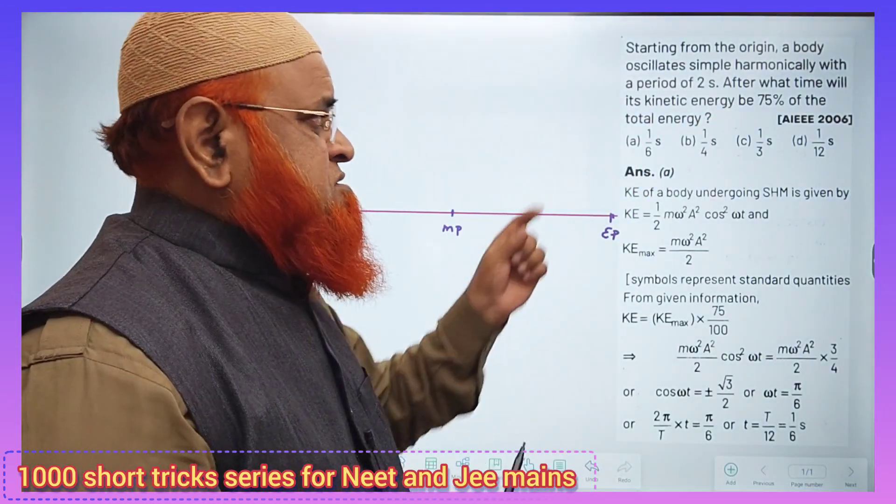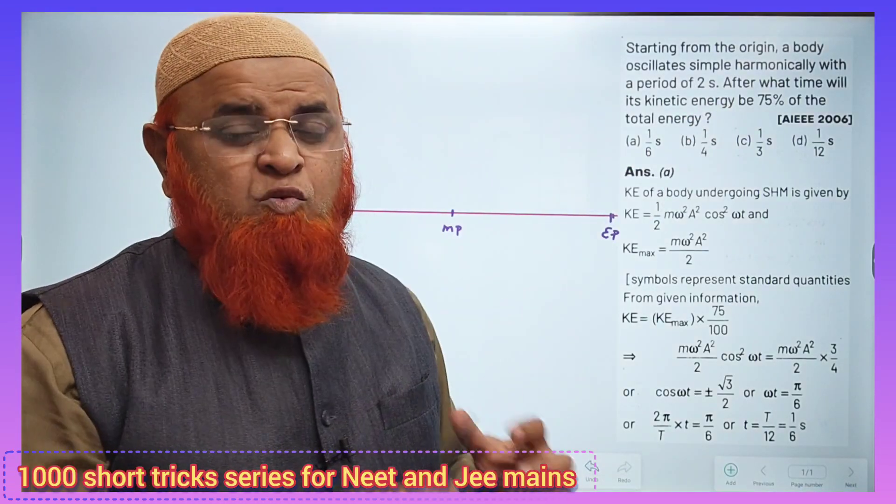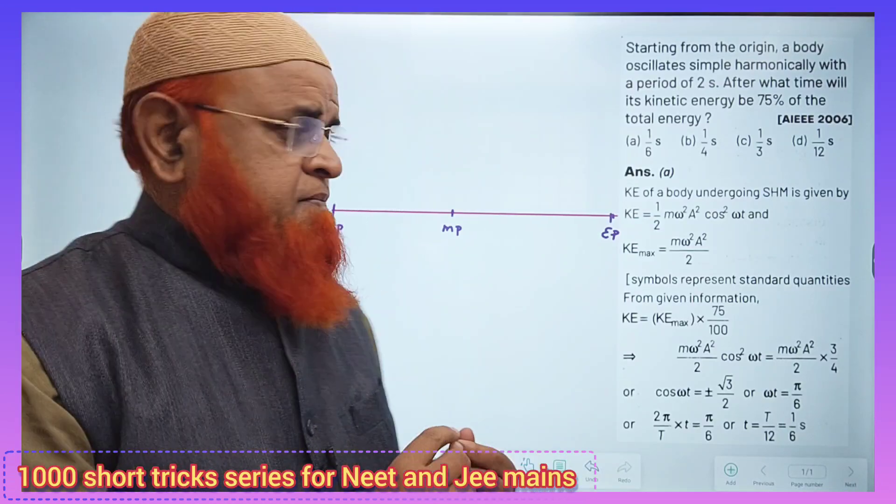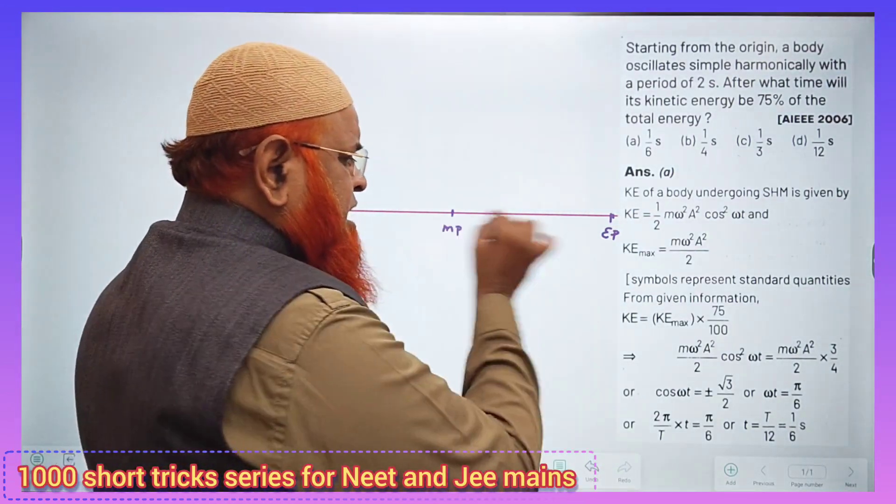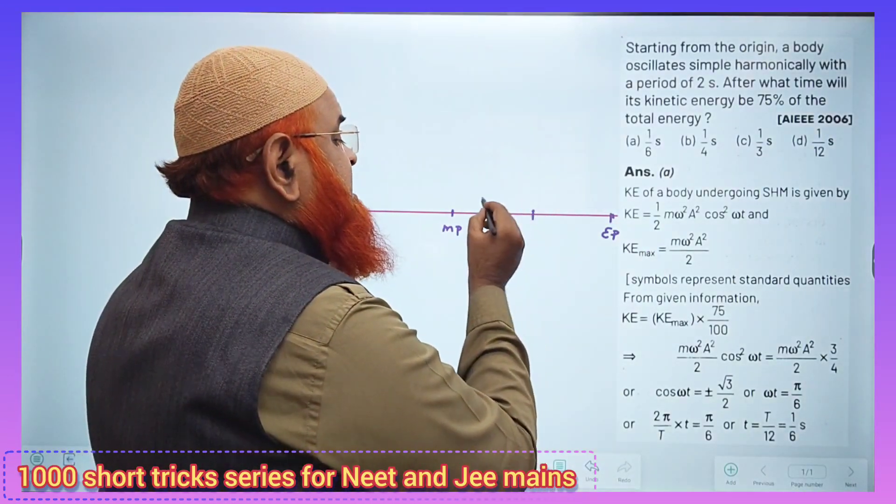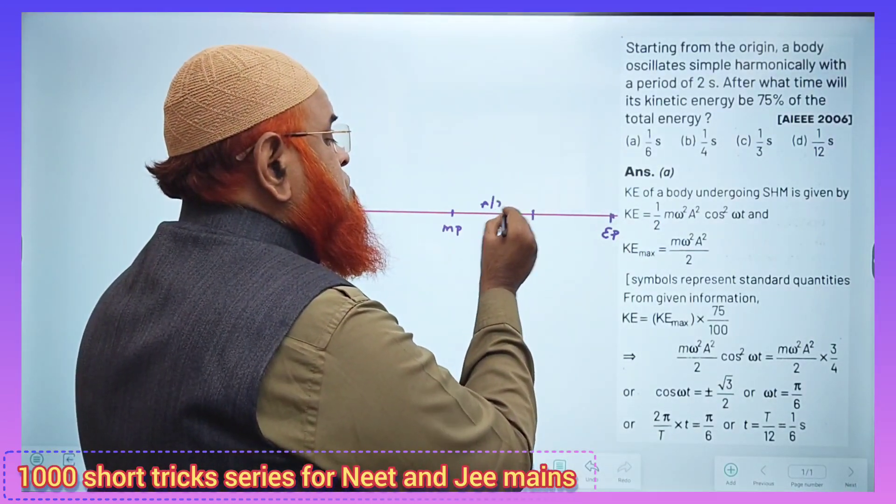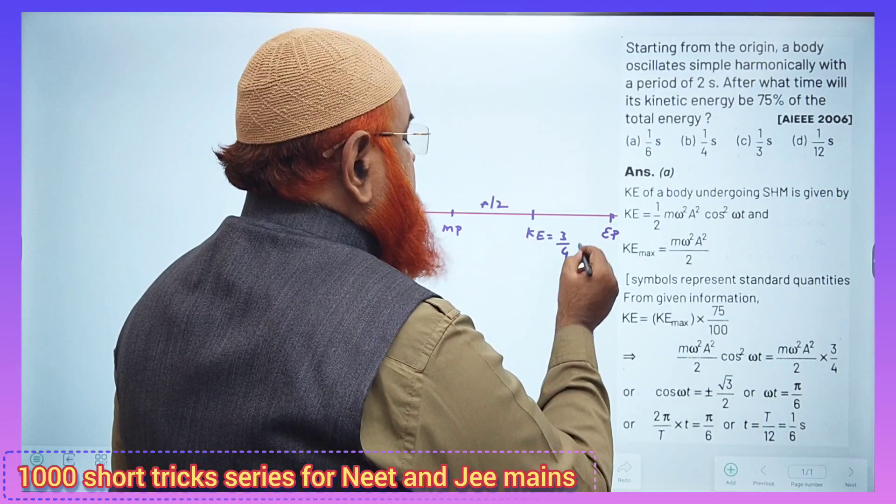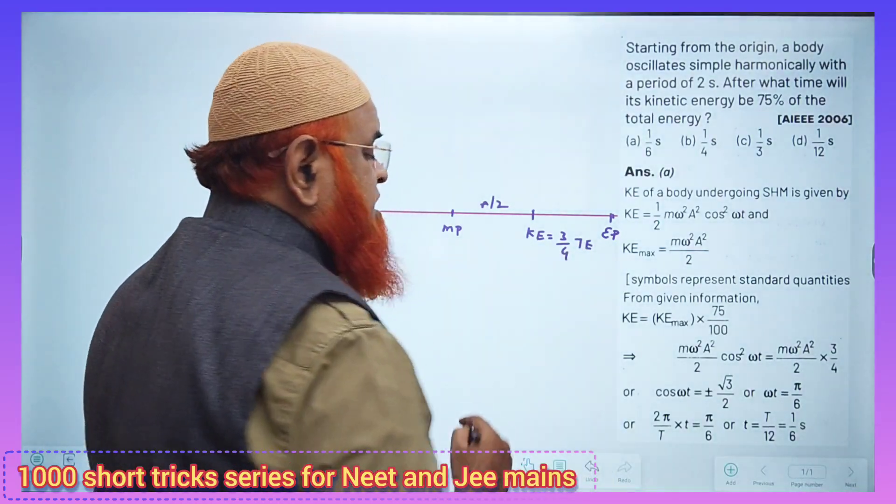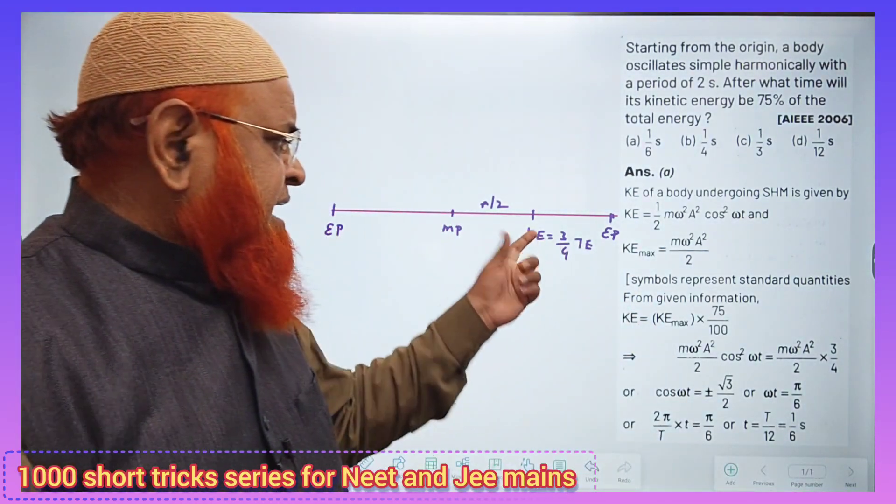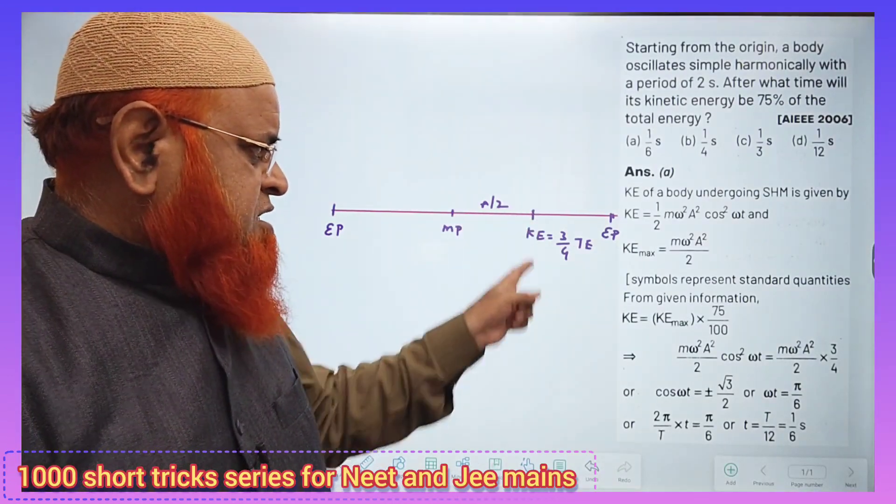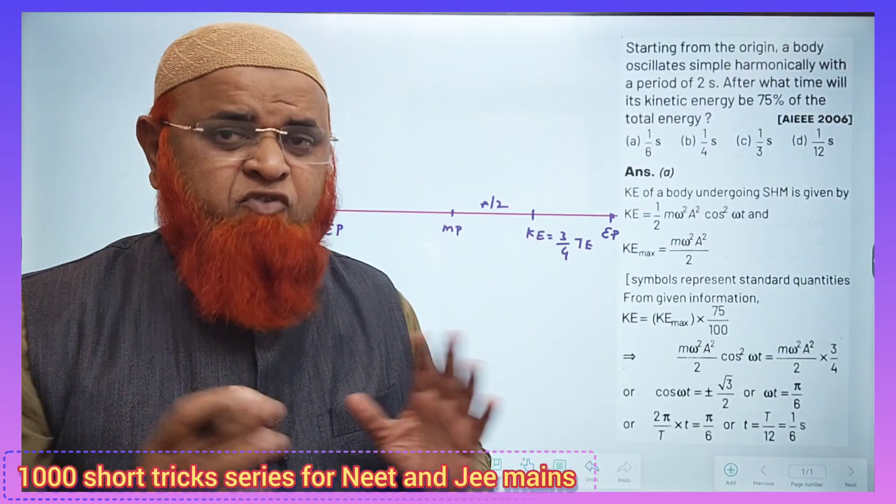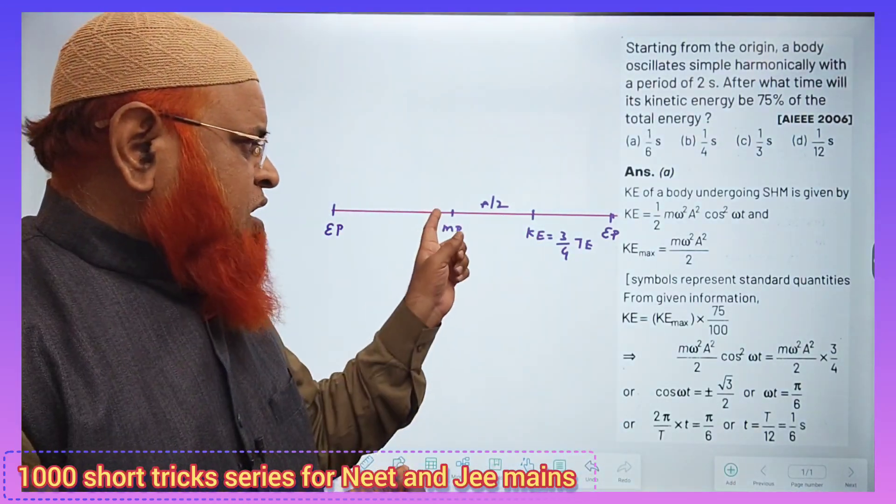You can find out where 75% of the total energy is kinetic energy. In simple harmonic motion with mean and extreme positions, exactly at a/2, kinetic energy will be three-fourths of the total energy. At this point, kinetic energy is exactly 75% of the total energy, that means three-fourths total energy.